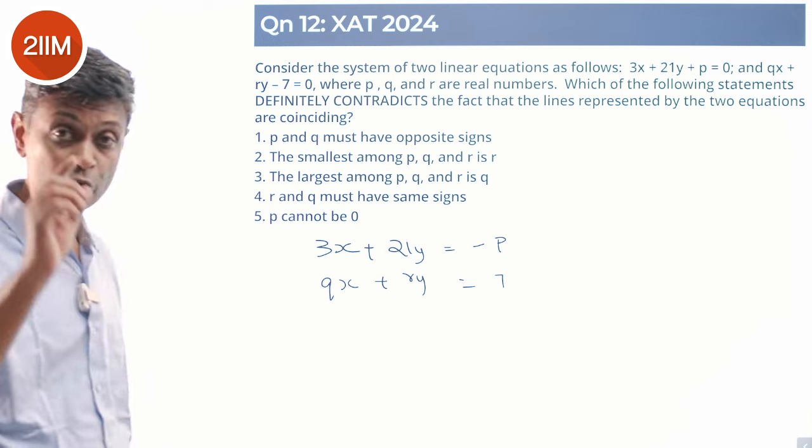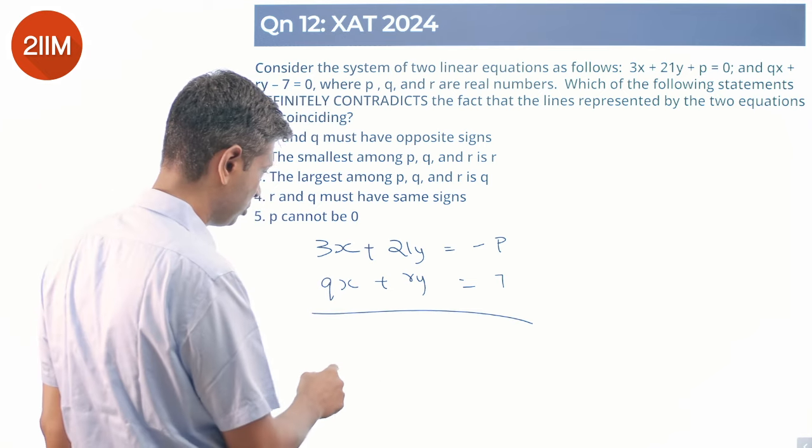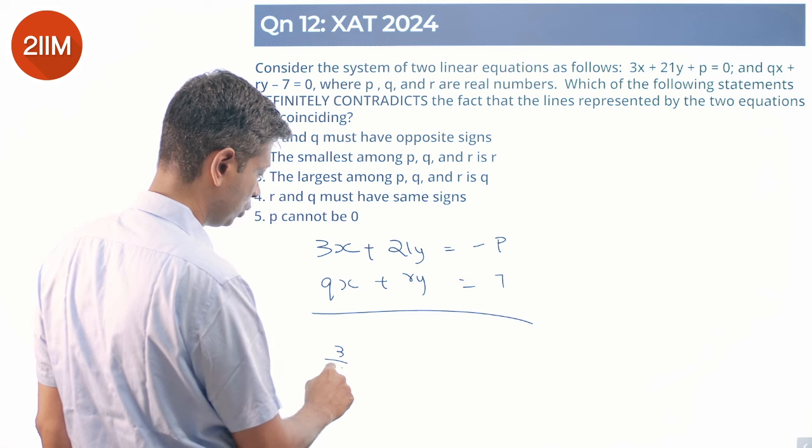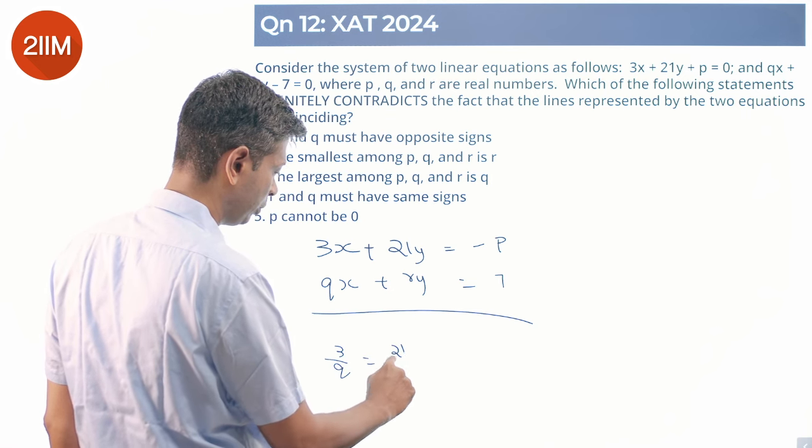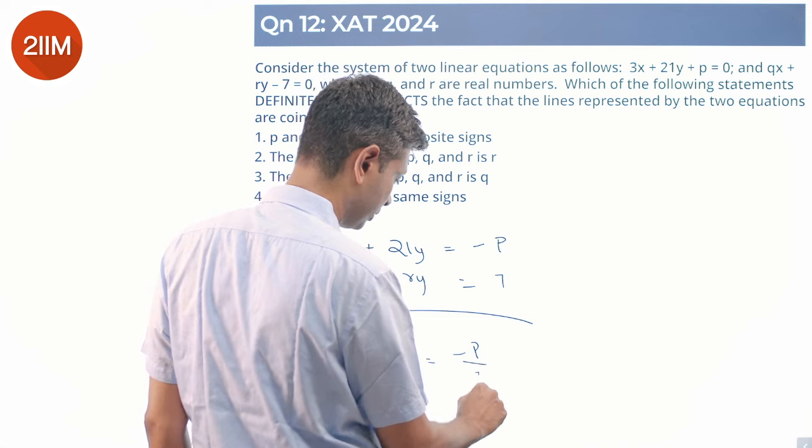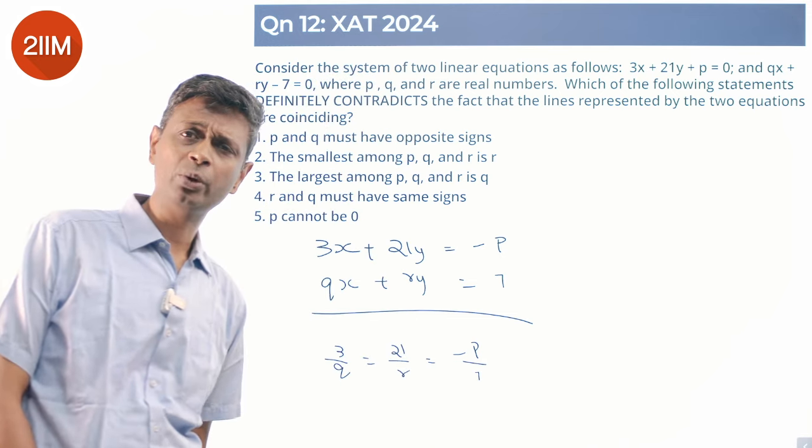Suppose these two lines coincided, then we should be able to say 3 by q equals 21 by r equals minus p by 7. A1 by A2 equals B1 by B2 equals C1 by C2. Only then they'll coincide.